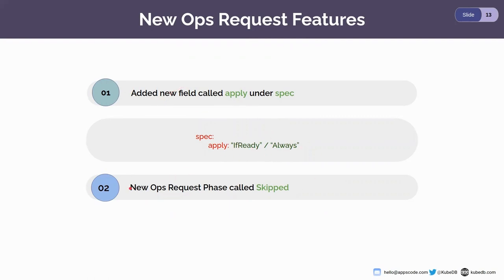We have also added a new phase for OpsRequests called skipped. Previously, when there were two vertical scaling OpsRequests or two horizontal scaling OpsRequests for the same database, we marked the previous ones as pending and applied the new one. But from this release, we have redesigned this — if there are more than one OpsRequest for the same type, the previous OpsRequest will be set as skipped, and only the latest one will be applied.